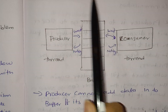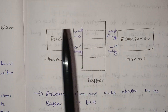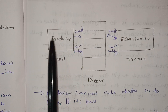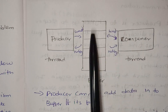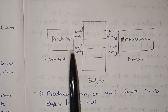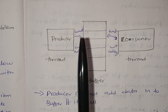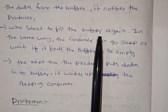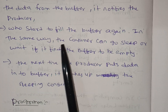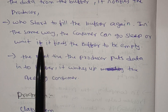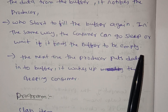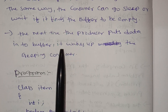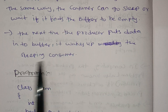Now we will solve this. Once we get the first data, we will send it to the producer. Then the producer will sleep. The consumer will get the data. In the same way, the consumer can go to sleep or wait if it finds the buffer is empty. The next time the producer puts data into the buffer, it wakes up the sleeping consumer.